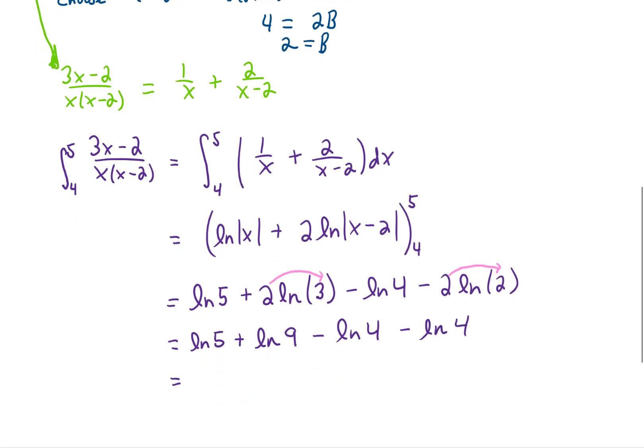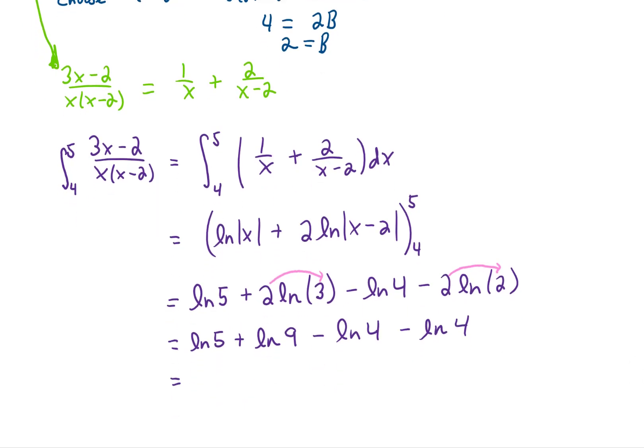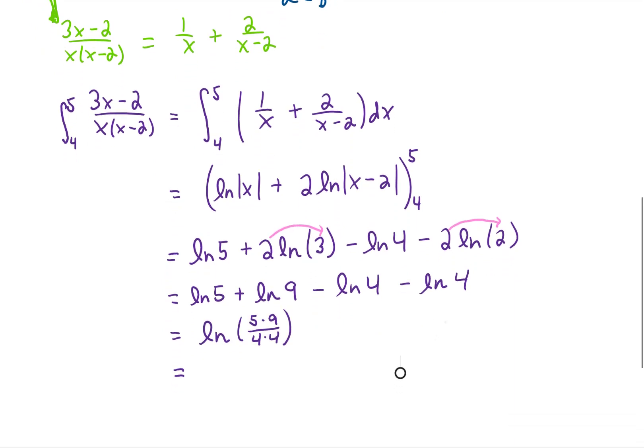Then recall that you can combine logarithms that are added and subtracted all into a single logarithm. All the positive terms go in the numerator, all the negative terms go in the denominator. And we will get a final answer of the natural log of 45 over 16. Now again, there are a lot of different ways you can write that out, but I think that's a pretty nice looking answer.